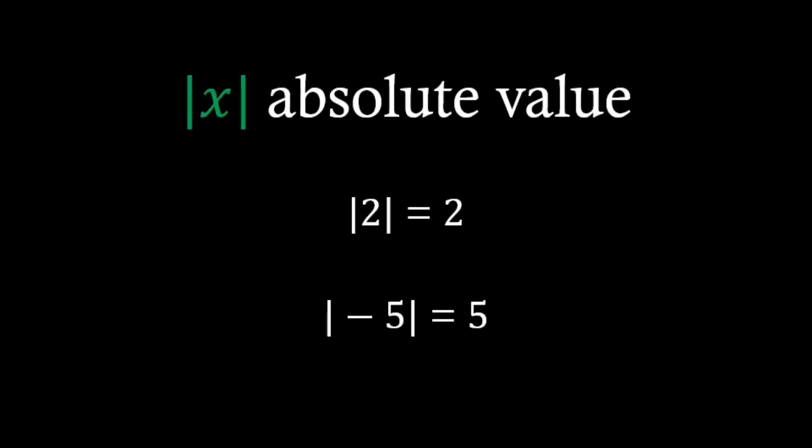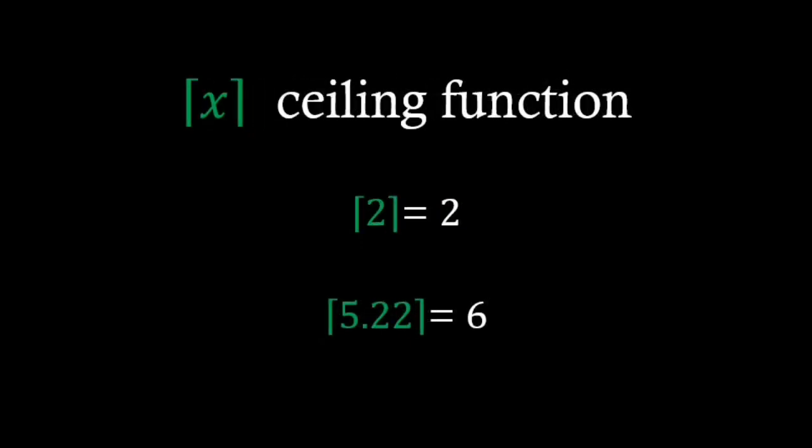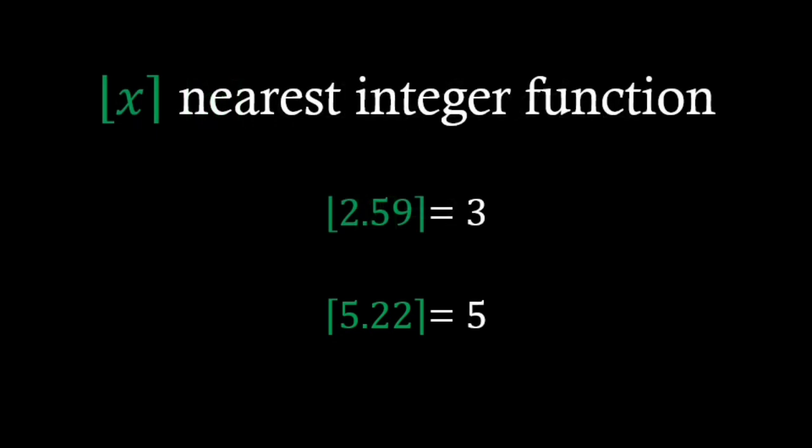Absolute value of a number represents the distance of that number from zero on the number line. The floor function returns the greatest integer less than or equal to the value. On the other hand, the ceiling function returns the smallest integer larger than or equal to the value. Nearest integer function, as its name suggests, returns the nearest integer to a given value.